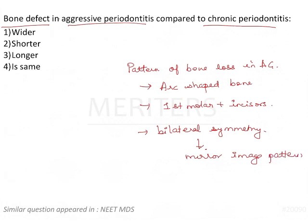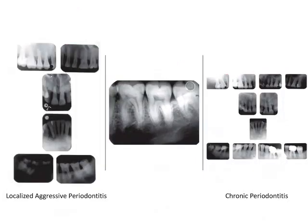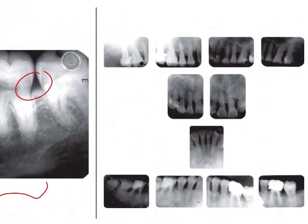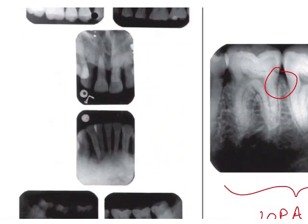These are the radiographic features of aggressive periodontitis. The answer options are: wider, shorter, longer, and the same. To visualize this better: here is an IOPA of a normal healthy periodontium with no bone loss. In chronic periodontitis, there is horizontal bone loss everywhere, whereas in localized aggressive periodontitis there is an arc-shaped bone loss.